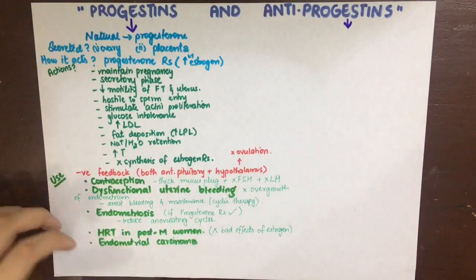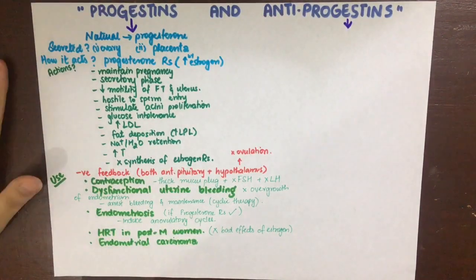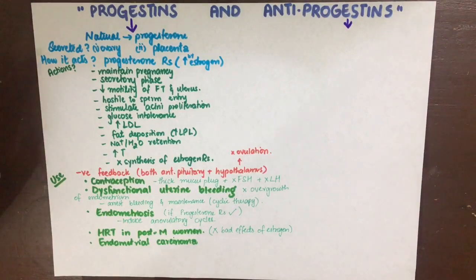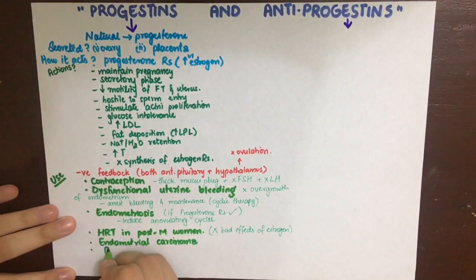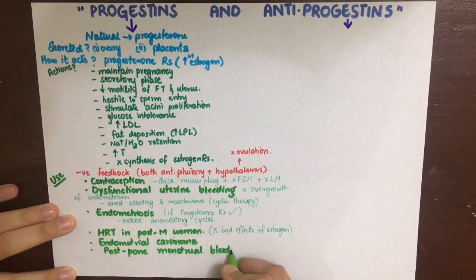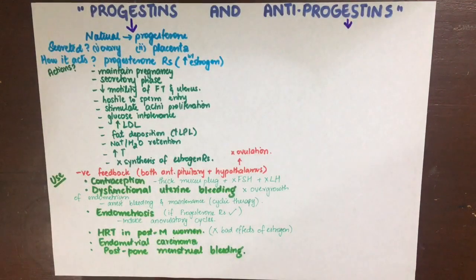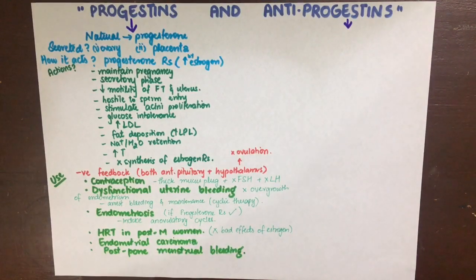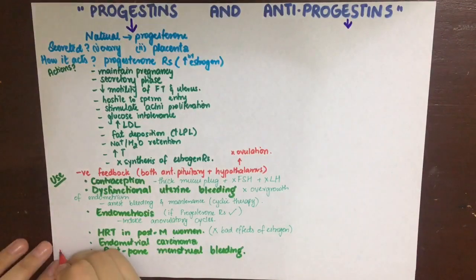It can also be used to postpone menstrual bleeding, because it maintains the endometrial layer. It can be used either alone or with estrogen, given three days before the expected menstruation, and withdrawal bleed will occur within 72 hours after stoppage of the progesterone.